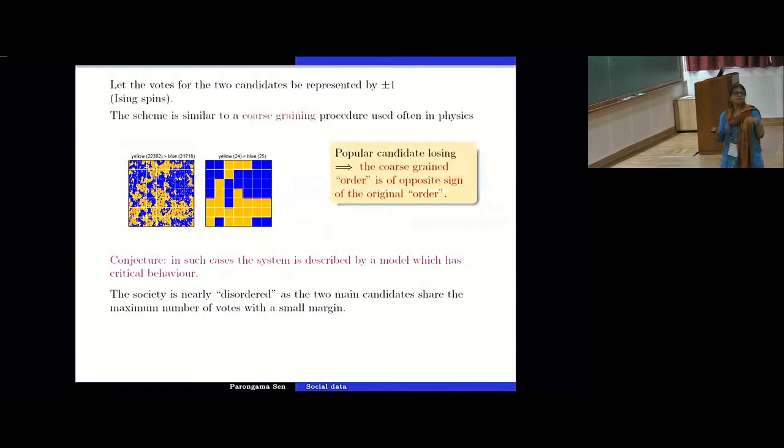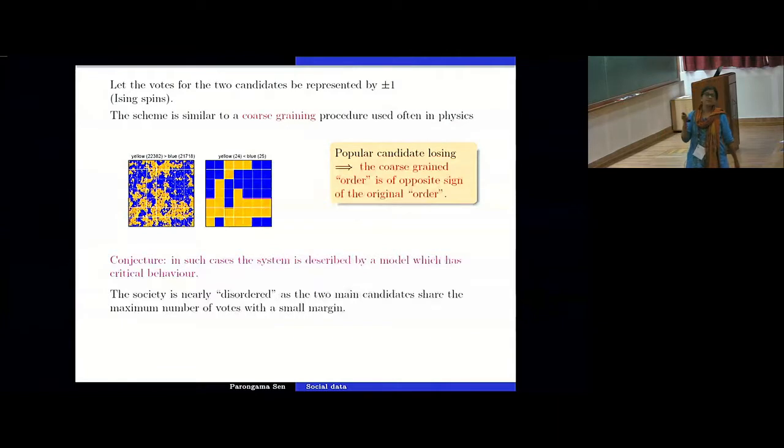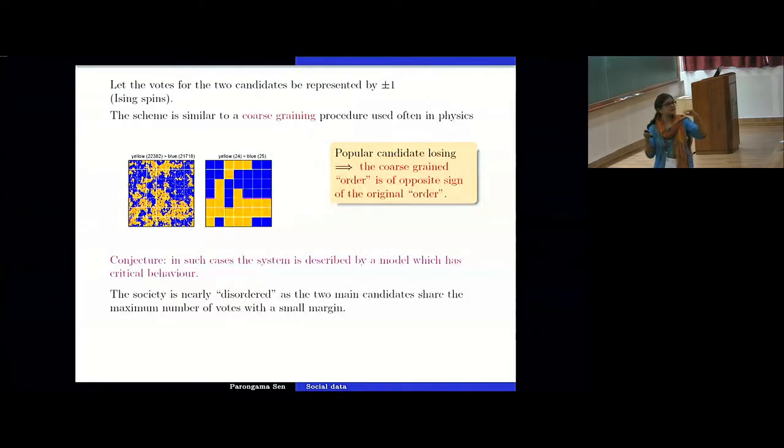So this is what happened in 2016 and we got interested to know that can we explain using some statistical physics models or methods can we explain how this takes place. Because this kind of thing happened in 2016 but it also happened three more times in the past. So what we now realize that this particular scheme which I told you about is very similar to a procedure called coarse graining which is often used in physics. So this is an example. So we have generated just two types of opinion which are represented by these two colors. So you scatter these things here. In this case you see that there are more yellow points than blue points. But when I do this coarse graining which means that I take each small square and if there are more blue points there I just replace it by a blue box. This is just simulating the electoral college process.